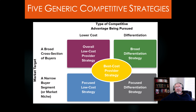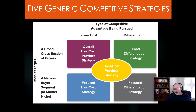The graph you saw in the prior presentation maps competitive advantage — from lower cost to differentiation on one axis — against target market — broad cross-section of buyers versus narrow or focused — on the other axis. Each quadrant corresponds to one of the first four generic competitive strategies. The best-cost provider sits at the intersection of those axes, aiming for that sweet spot.